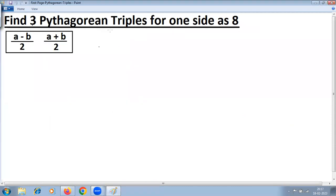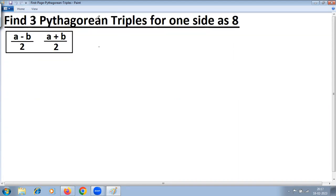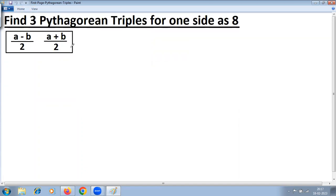Find three Pythagorean triples for one side as eight. The formula for this is a minus b upon two, a plus b upon two, where a and b refers to factors of square of the given side.